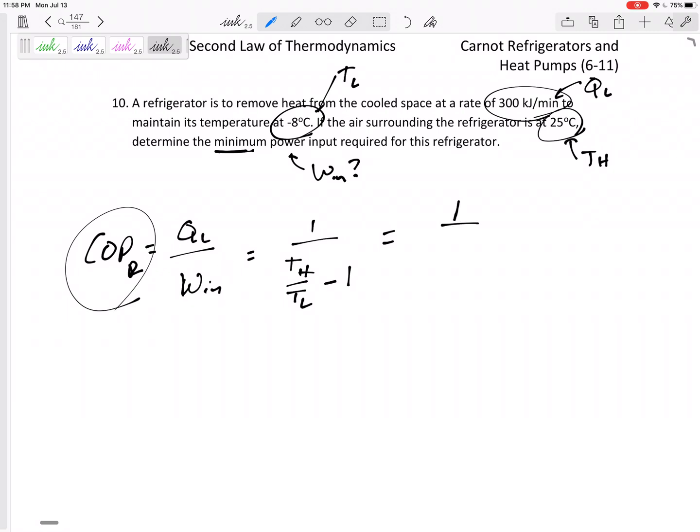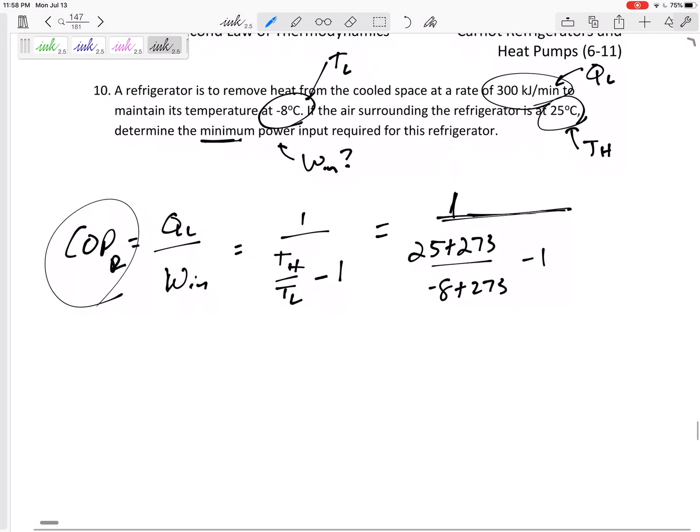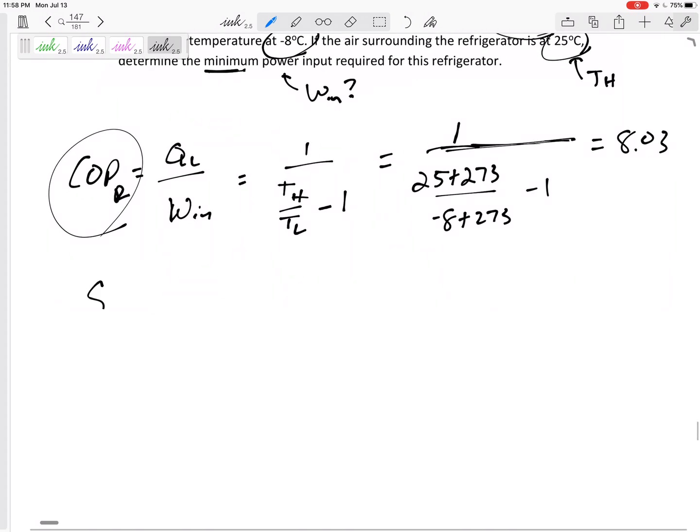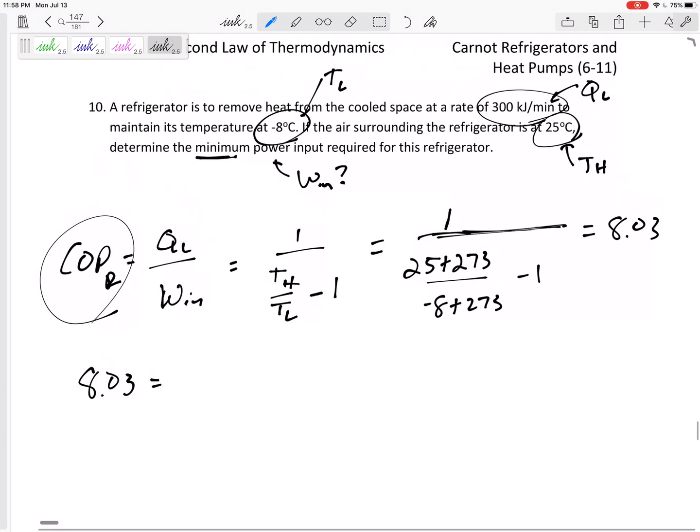So this would be one over TH, 25 plus 273, over negative 8 plus 273, minus one. Be careful with the math, don't make silly math mistakes. Coefficient of performance: 8.03.